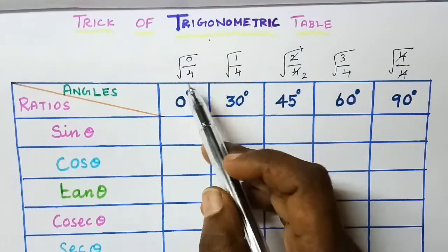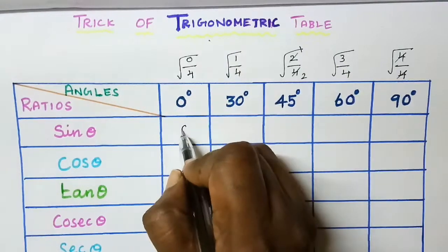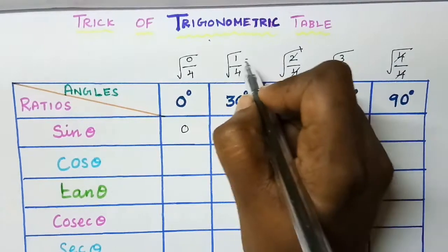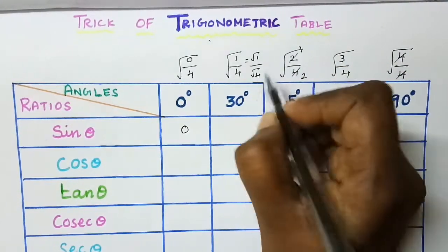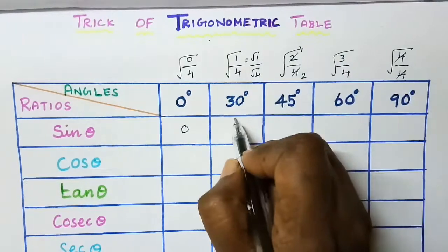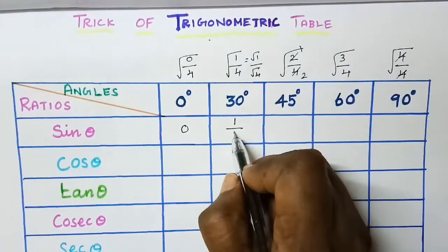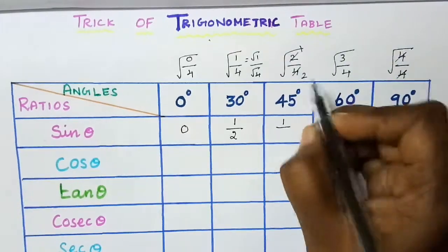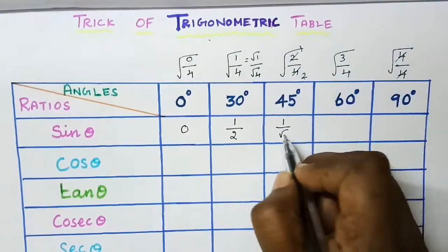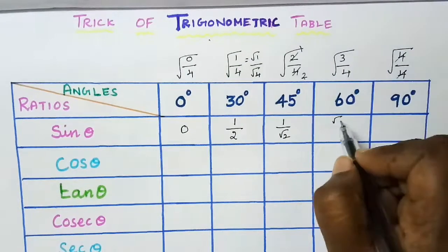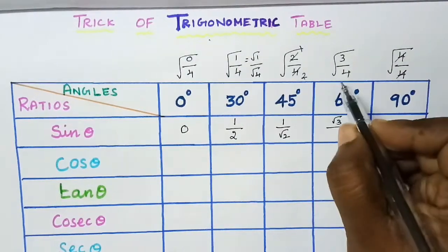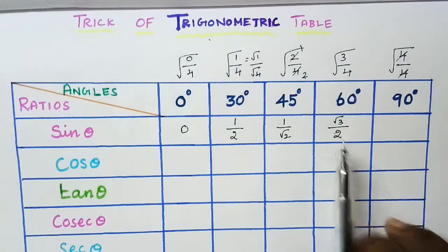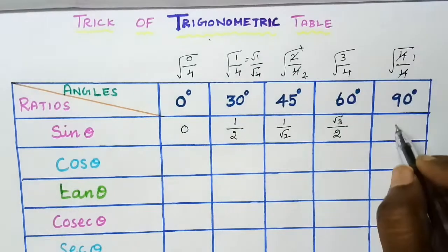0 by 4 is 0 itself, so write 0. Next, square root of 1 by square root of 4: square root of 1 is 1 and square root of 4 is 2, giving 1/2. Then square root of 2 over 2, giving root 2 over 2. Square root of 3 gives root 3 over 2. And square root of 4 is 2, so the last value is 1.